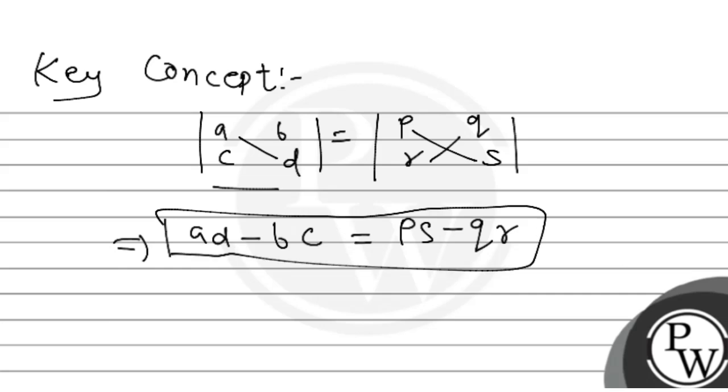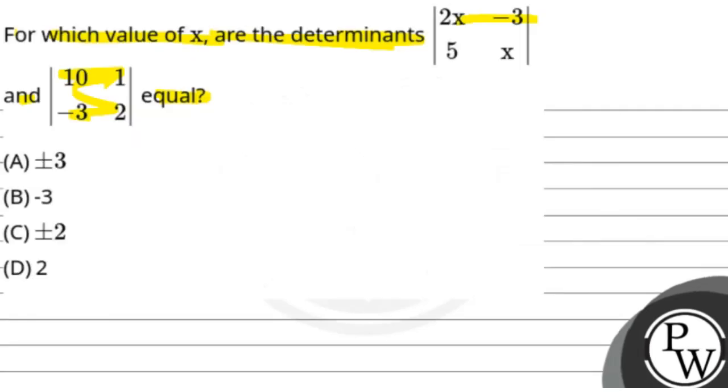Now let's apply this to the question. What do we have? Here we have the first determinant: 2x, minus 3, 5, x.